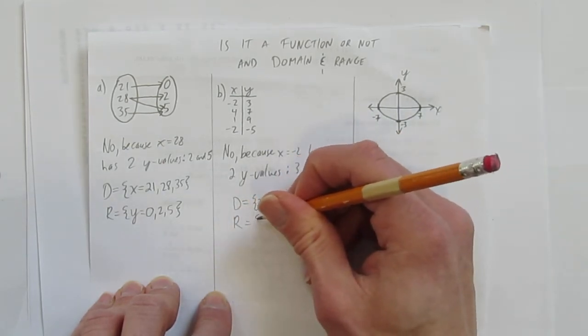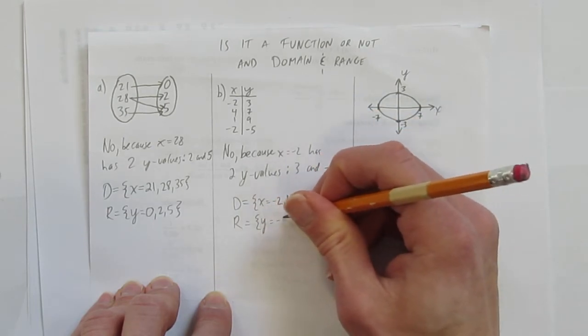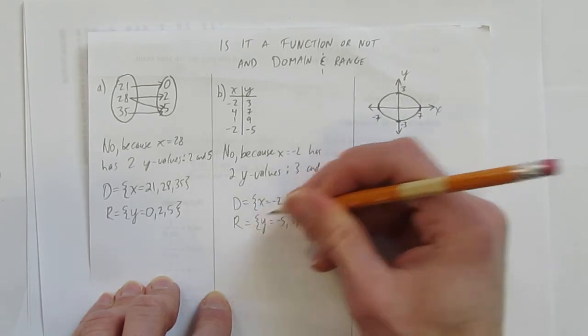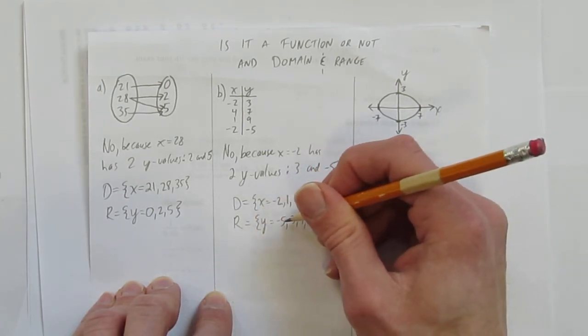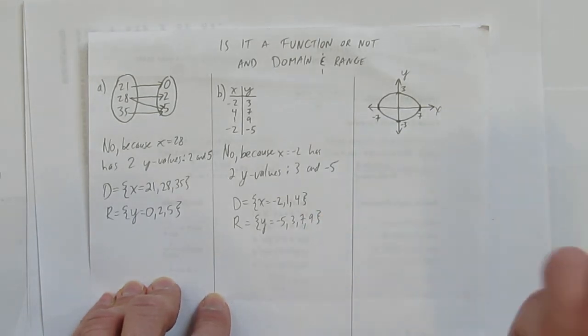The range, another list of numbers. Again, put it in order. They can be a negative 5 or a 3 or a 7 or a 9. This reads, the range is the set of y equals negative 5 or 3 or 7 or 9. Great! We did two.